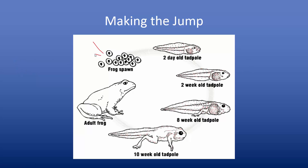Amphibian eggs are actually called spawn — so we have frog spawn. Then we go through the tadpole stages, and tadpoles actually filter water through their gills; they do have gills. As they develop into young adults — around the ten-week-old stage — they start losing their gills, which are absorbed into the body and develop into lungs. And then we end up with an adult frog.